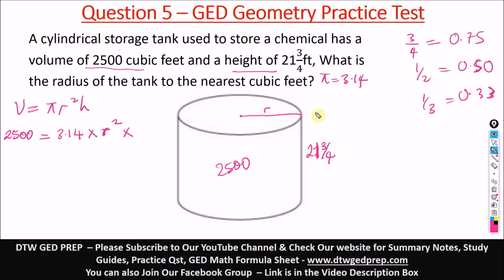We can quickly change this as 21.75. Just add this 0.75 to 21. When you add it, you have 21.75. So we have 21.75.